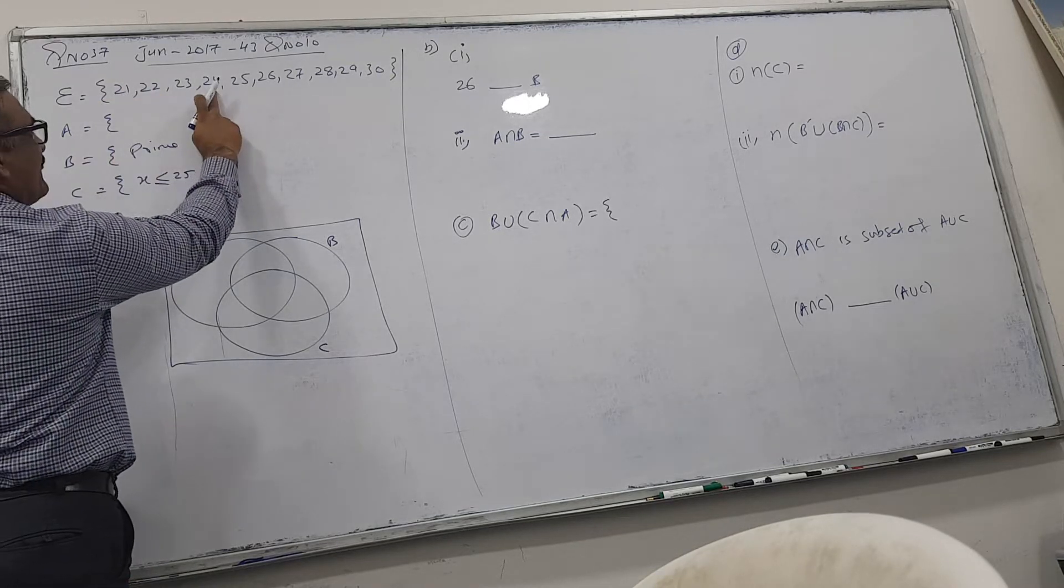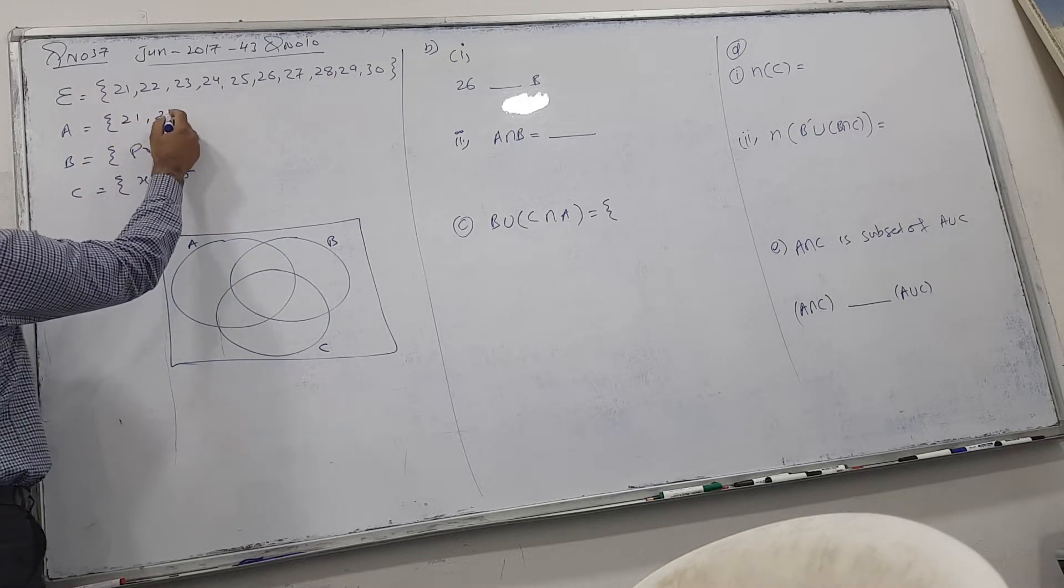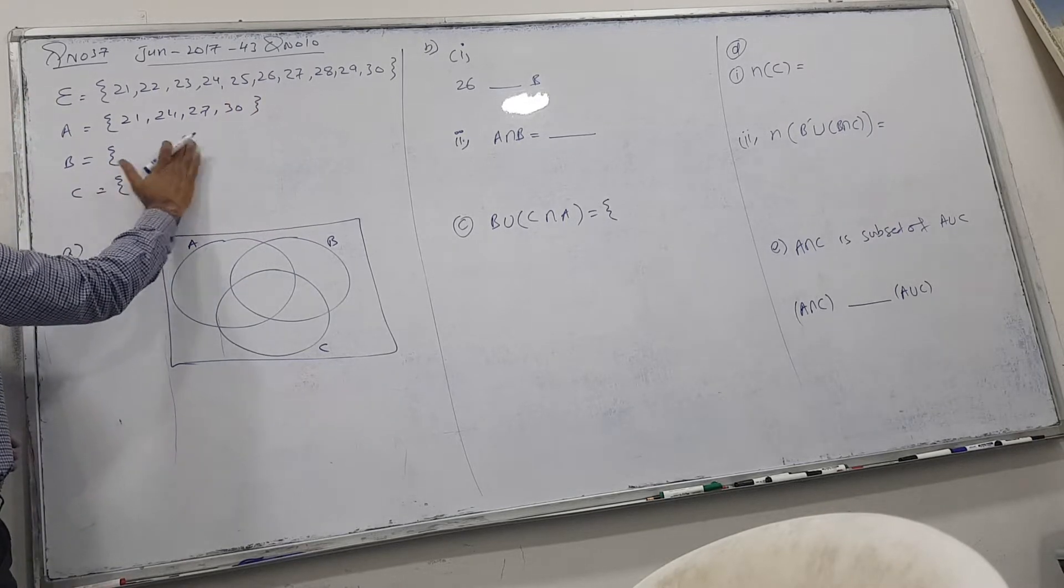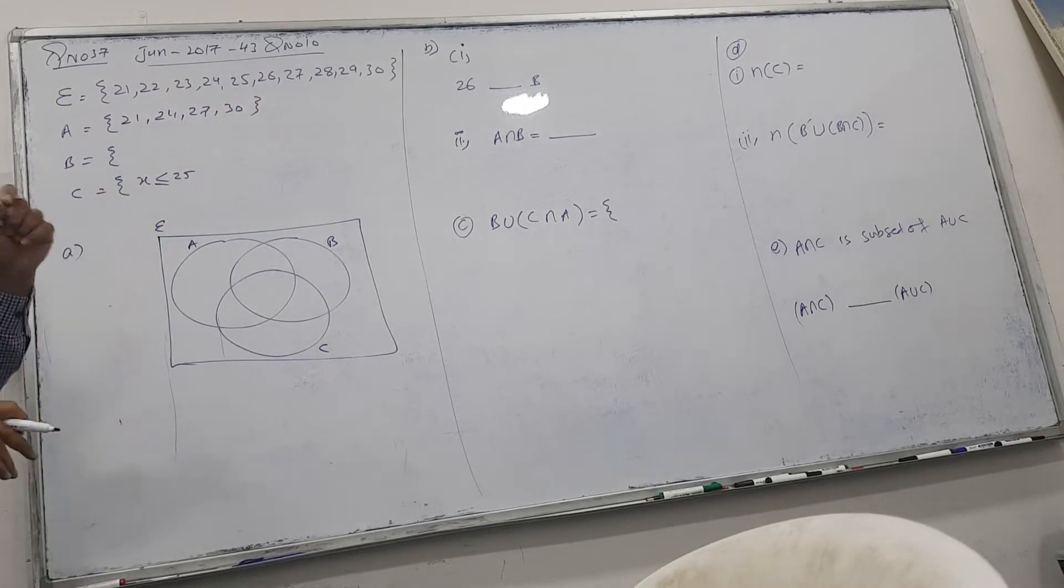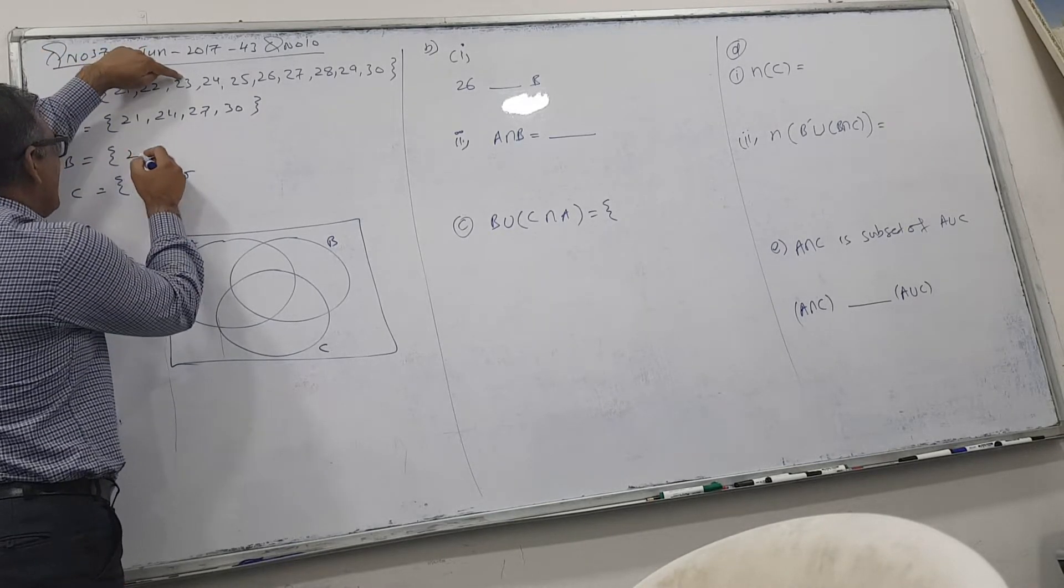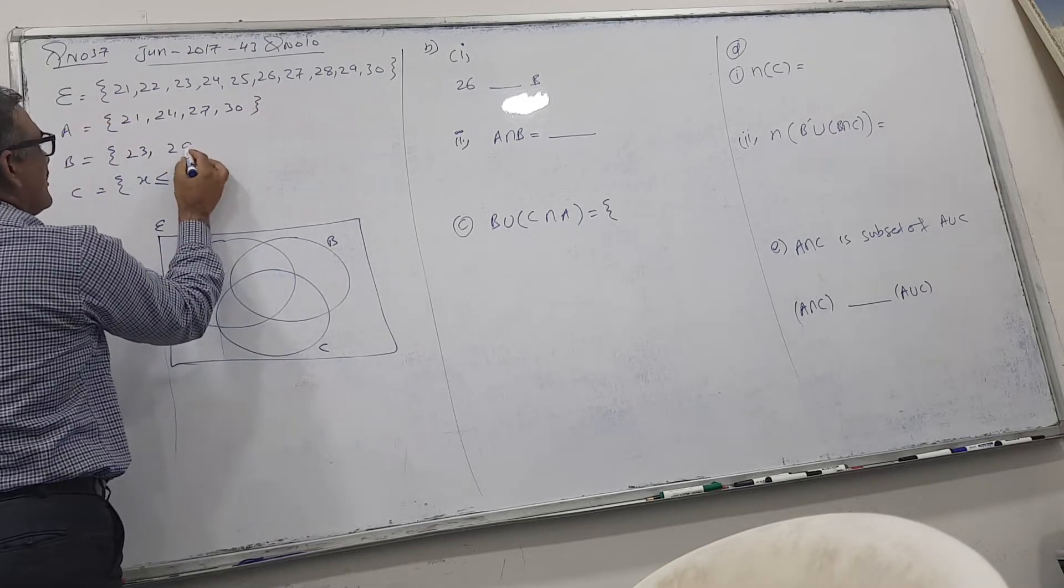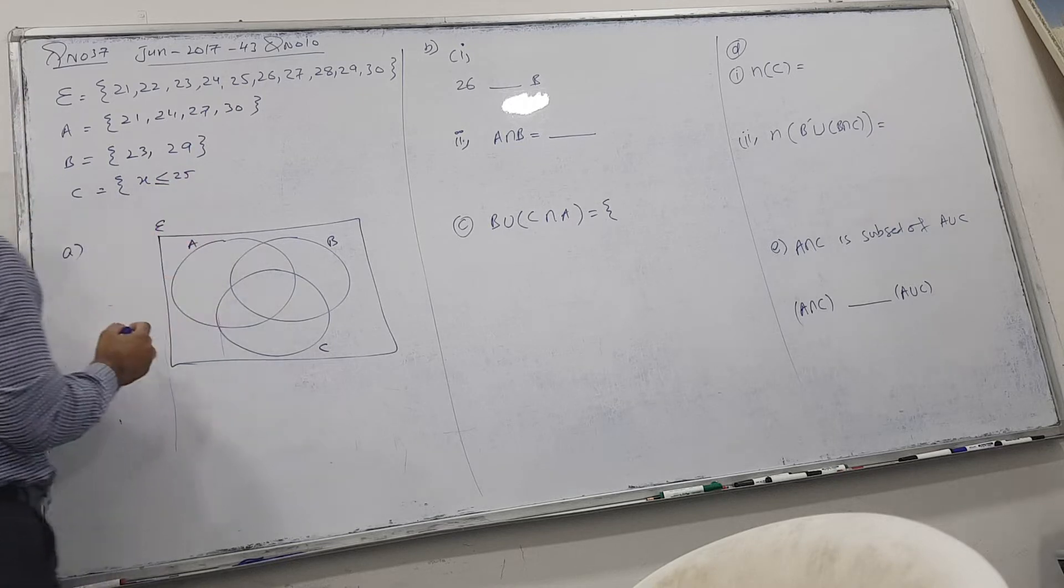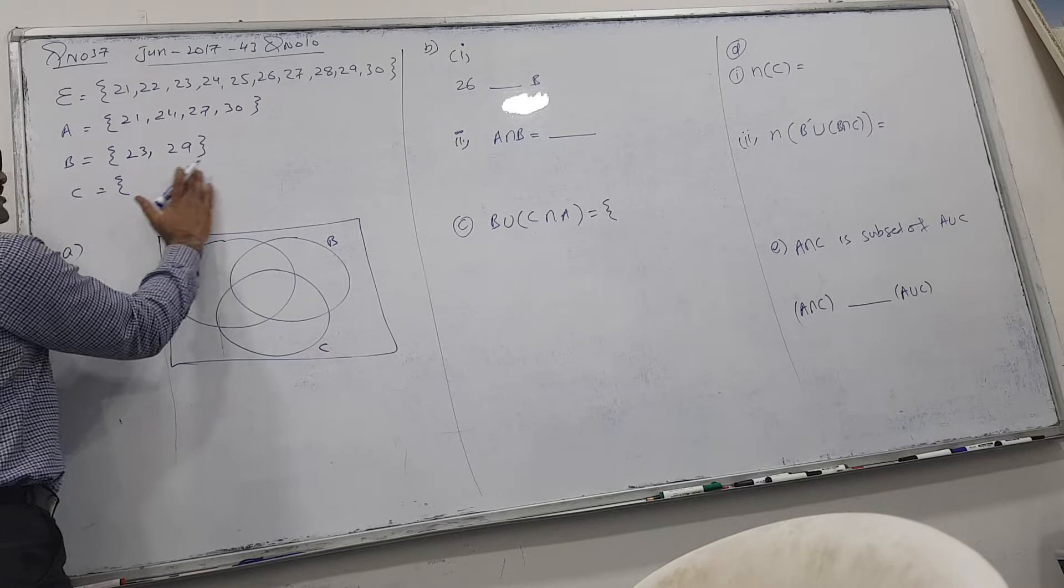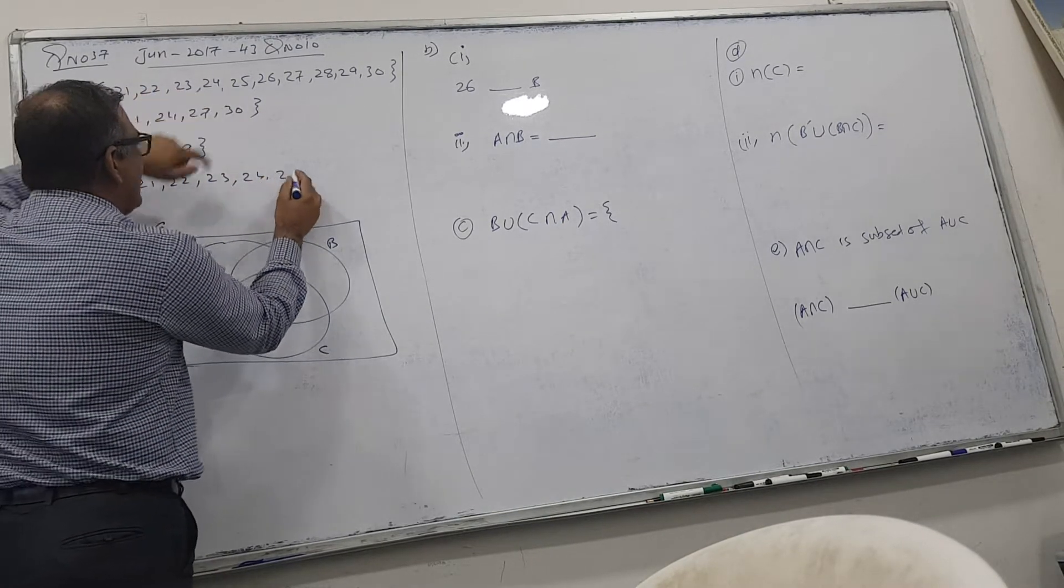So 21, 24, 27 and 30. Write all these numbers. Prime numbers means divisible by itself and 1. So prime numbers are 23 and 29. Only 2 prime numbers we have. Less than and equal to 25 means 25 and below, so I can say 21, 22, 23, 24 and 25.